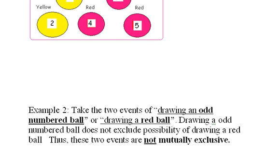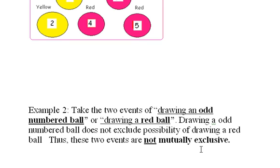Let's look at another example. Example 2: take the two events of drawing an odd numbered ball or drawing a red ball. Drawing an odd numbered ball does not exclude the possibility of drawing a red ball. In other words, they can both happen at the same time. You can draw a 3 — that's an odd numbered ball and also a red ball. And vice versa, you can draw a red ball and get an odd numbered ball. Thus, these two events are not mutually exclusive.